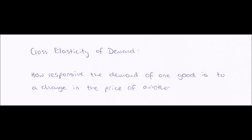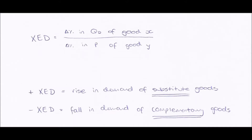We're comparing two different goods here — good X and good Y, for example. So how much the demand of good X changes when the price of good Y changes. Just like the other elasticities, we can work this out mathematically using a formula. Cross elasticity of demand, or XED, equals the percentage change in quantity demanded of good X divided by the percentage change in price of good Y.